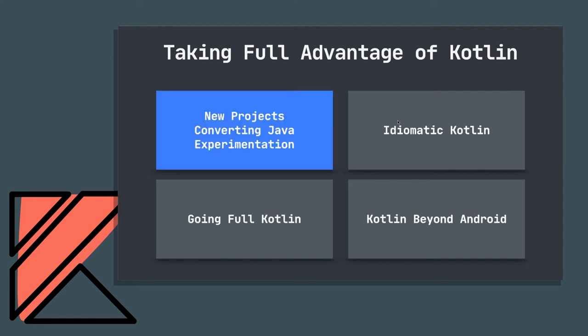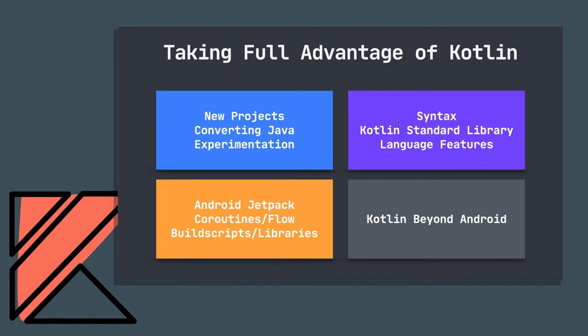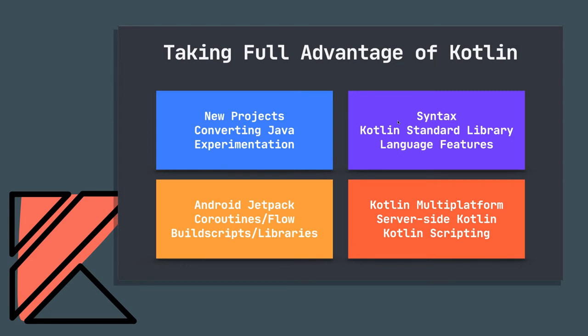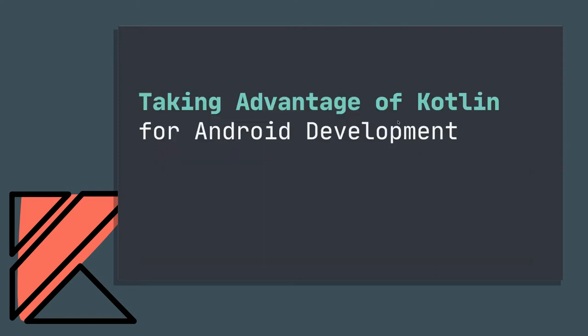In the first section, we'll talk about setting up a new project, converting Java to Kotlin, and how to start experimenting with the language. Then we'll look at some syntax highlights, specific functions from the Kotlin standard library, and language features particularly useful for Android. After that, we'll look at Android Jetpack more closely—Android KTX extension functions, coroutines and Flow, build scripts, and different libraries. Finally, we'll round it out by looking at topics like Kotlin Multiplatform, server-side Kotlin, and different ways to leverage Kotlin.